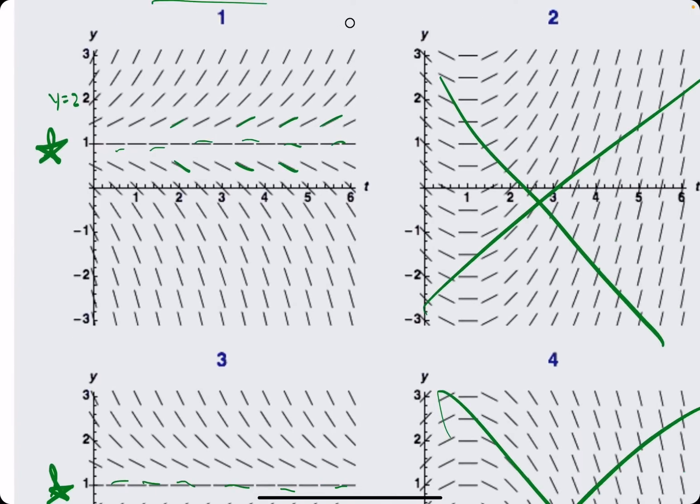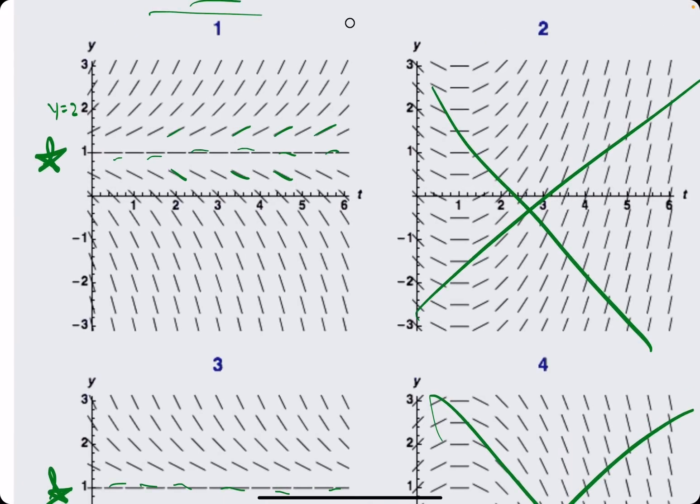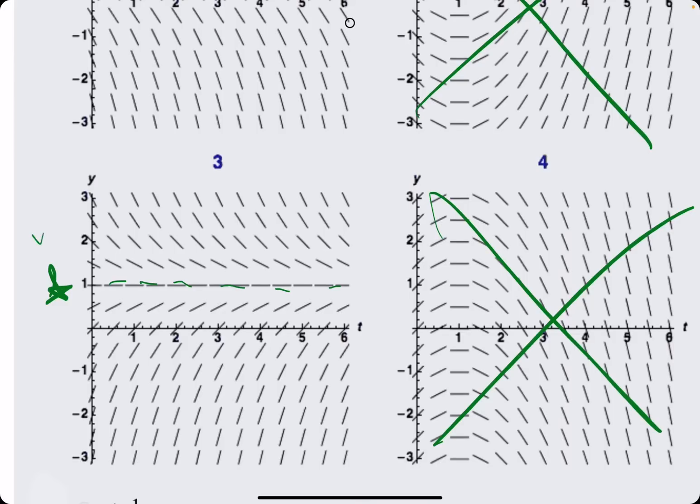Let's test y = 2. At y = 2, graph 1 has positive slopes, while graph 3 has all negative slopes.